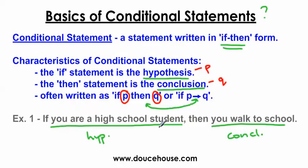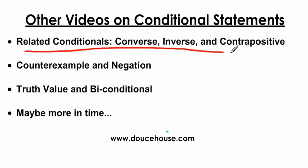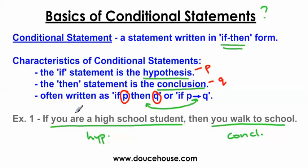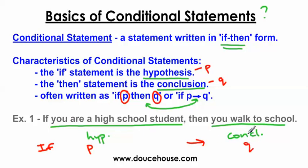Now I want to talk about the if-P-then-Q part, because this is going to be very helpful when we get to the video on converse, inverse, and contrapositives. For example one — 'if you are a high school student, then you walk to school' — the entire hypothesis statement is the P, and the conclusion statement is the Q. So the hypothesis is the P and the conclusion is the Q.